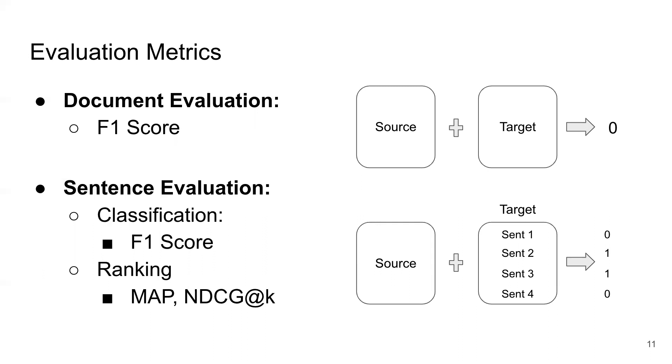Then there's the sentence level evaluation where we're evaluating the quality of the model's predictions for each target sentence individually. This could either be a classification task over sentences, derived or not derived, or a ranking task where the model ranks the sentences in the target document by their predicted level of derivedness from the source and we evaluate that ranking.